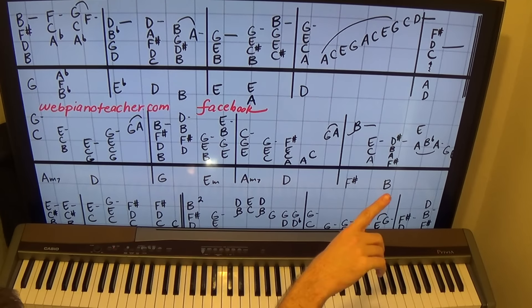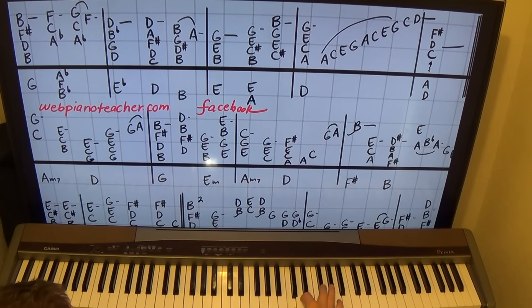The next measure, we have a D7. C, D, F sharp in the right. Left hand is up high for this, though. Above middle C on D and A. And we'll just roll it all. And then we'll wait for the next measure, which we teach in part two on webpianoteacher.com.